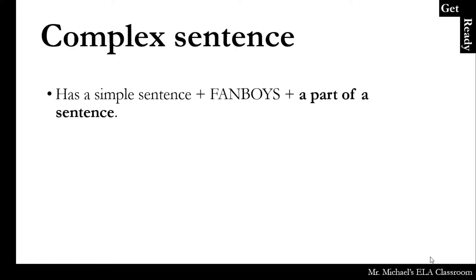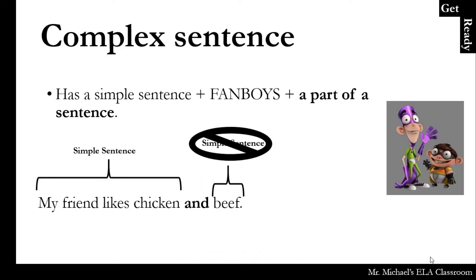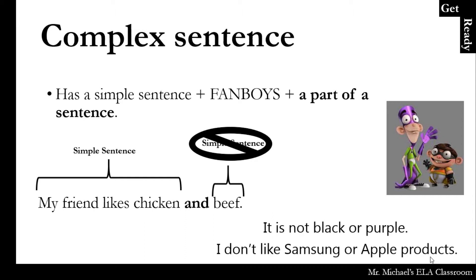A complex sentence is a bit different. It has a simple sentence, plus a FANBOY, plus a part of a sentence. For example: "My friend likes chicken and beef." The simple sentence is "My friend likes chicken" — "beef" is not a simple sentence on its own; it is just a part or phrase. More examples: "It's not black or purple." "I don't like Samsung or Apple products."